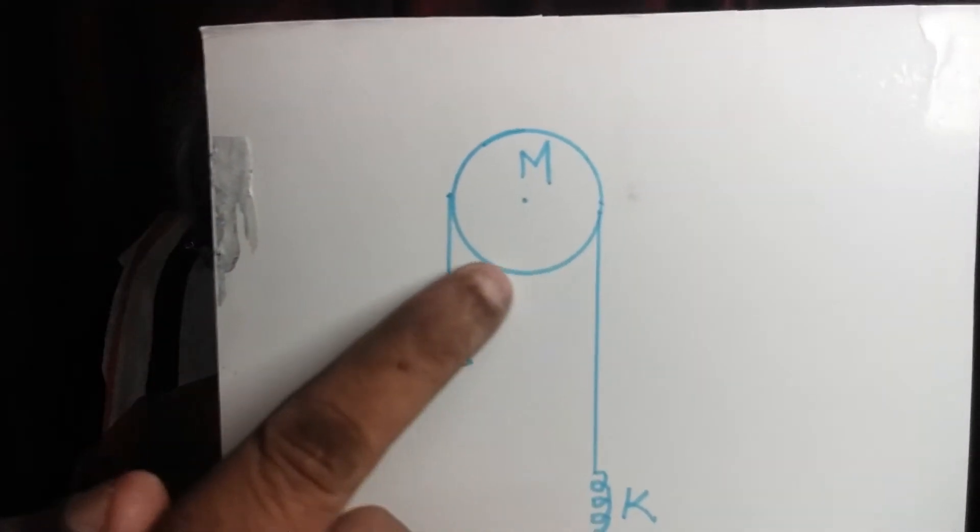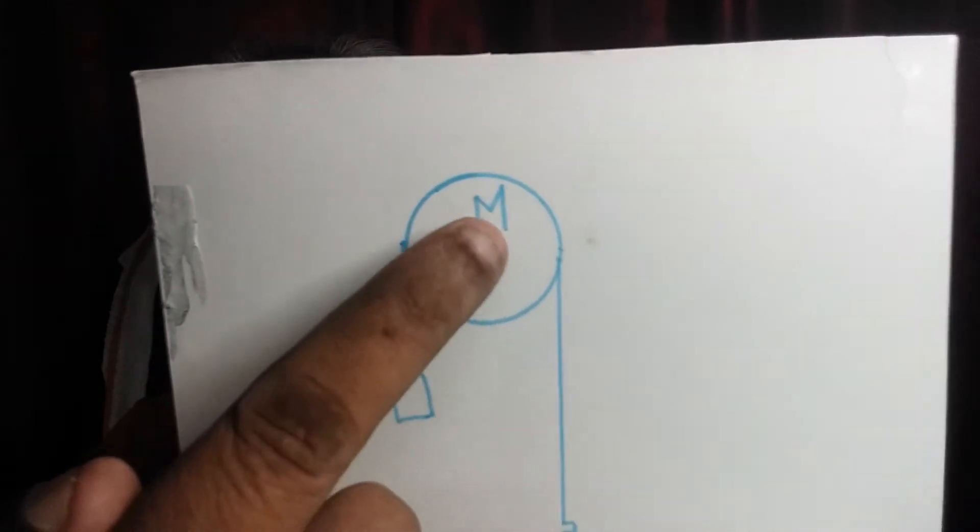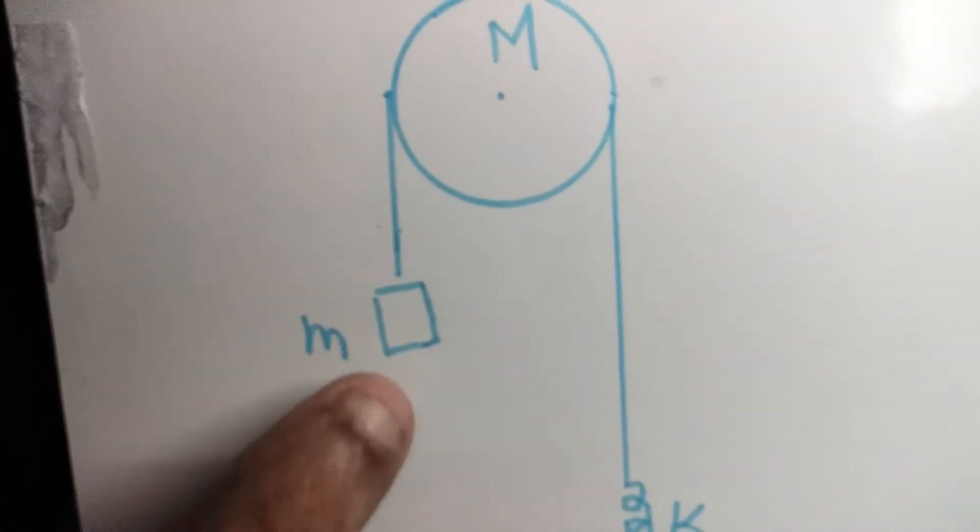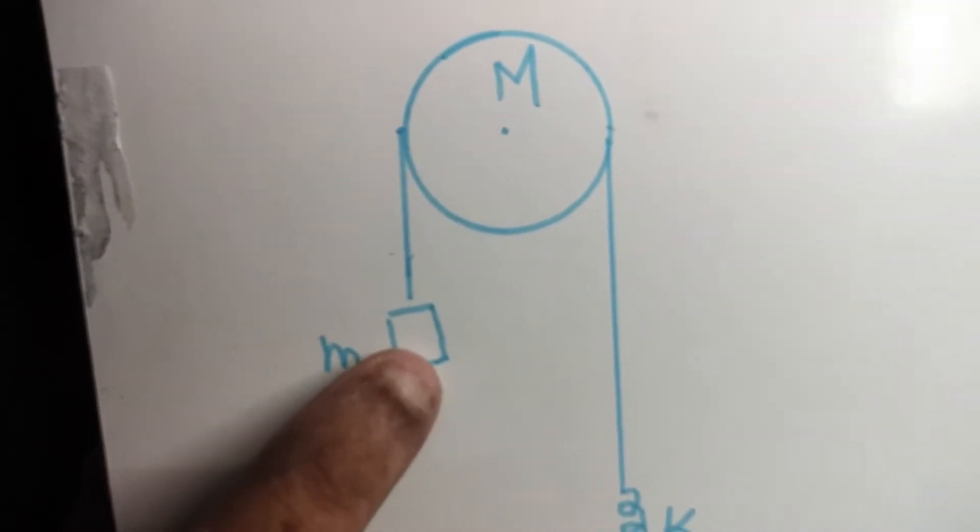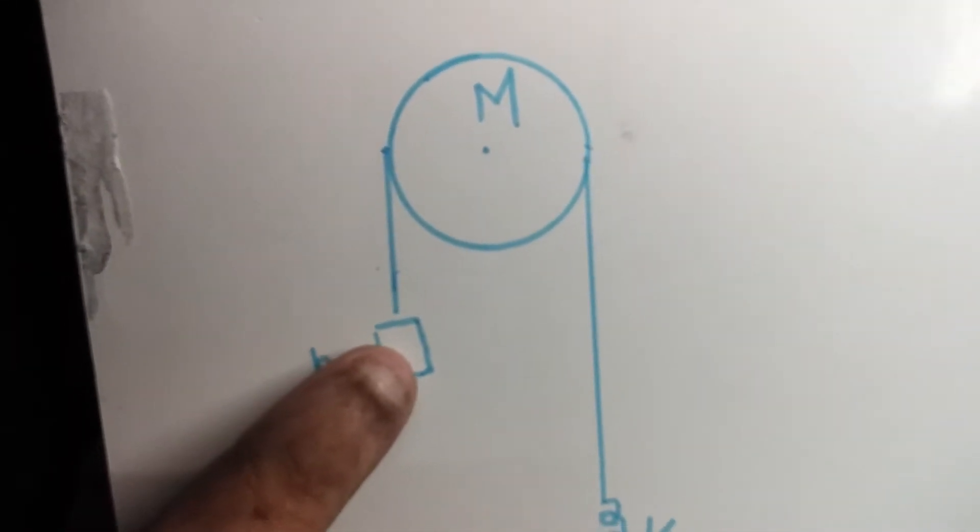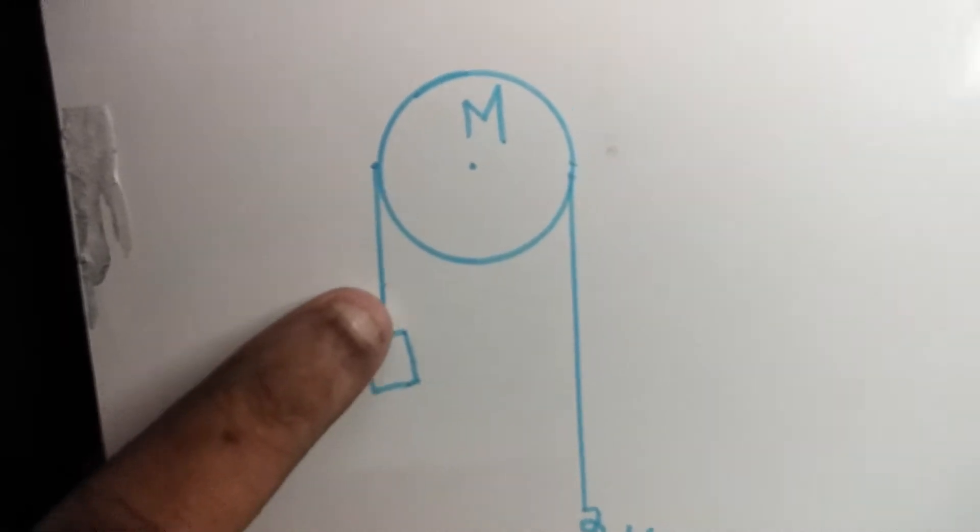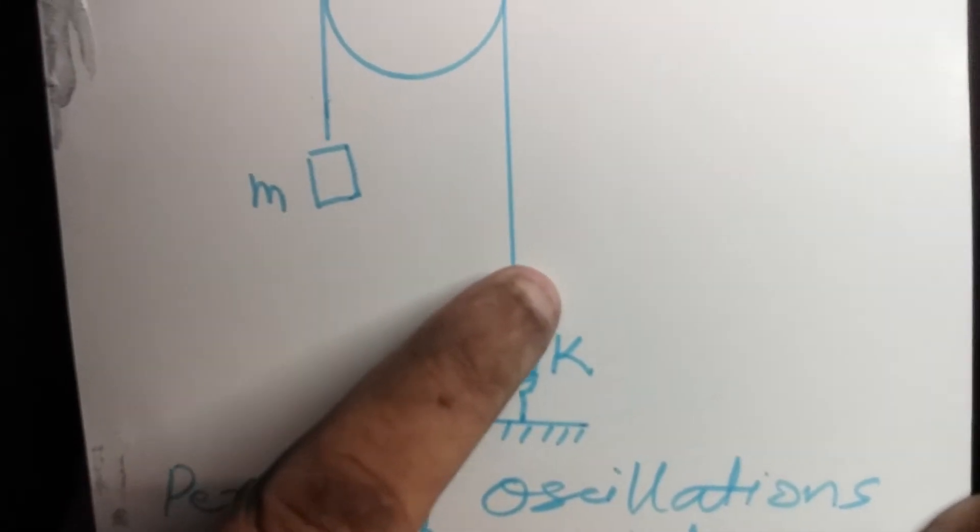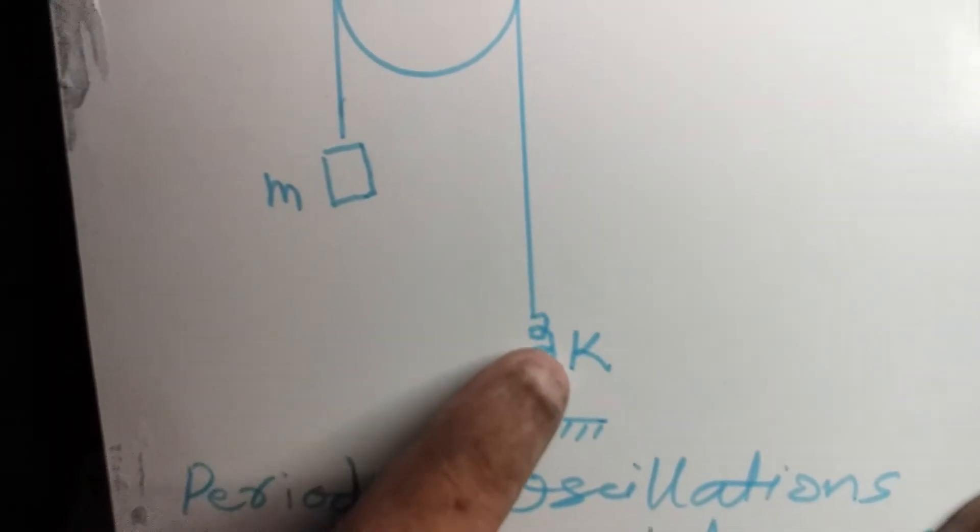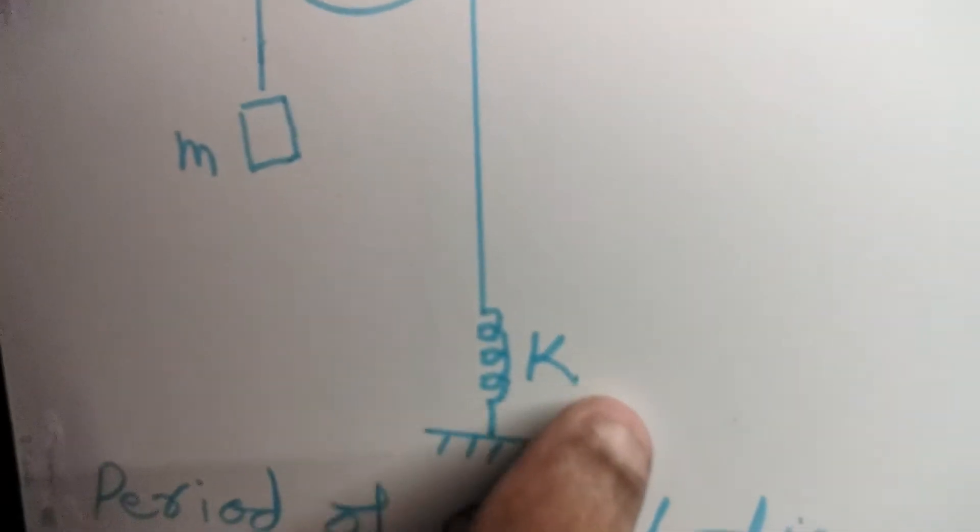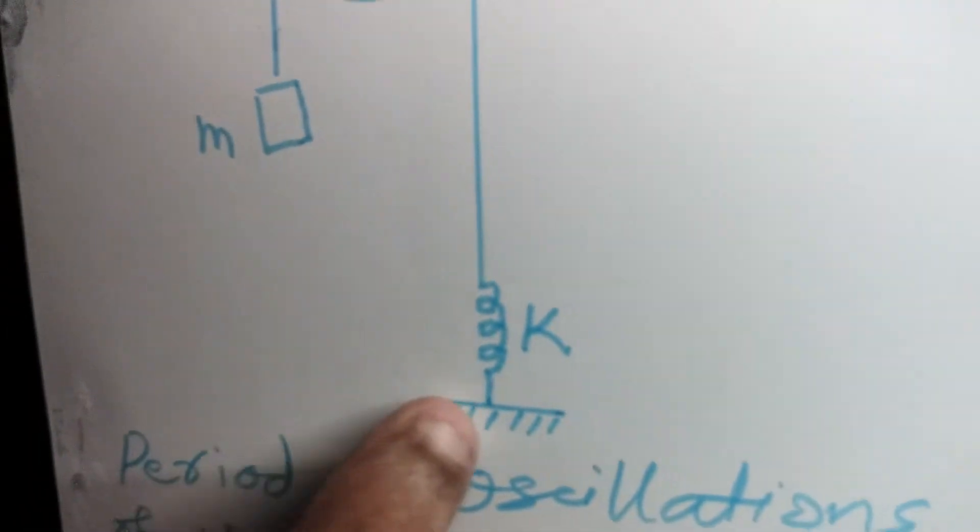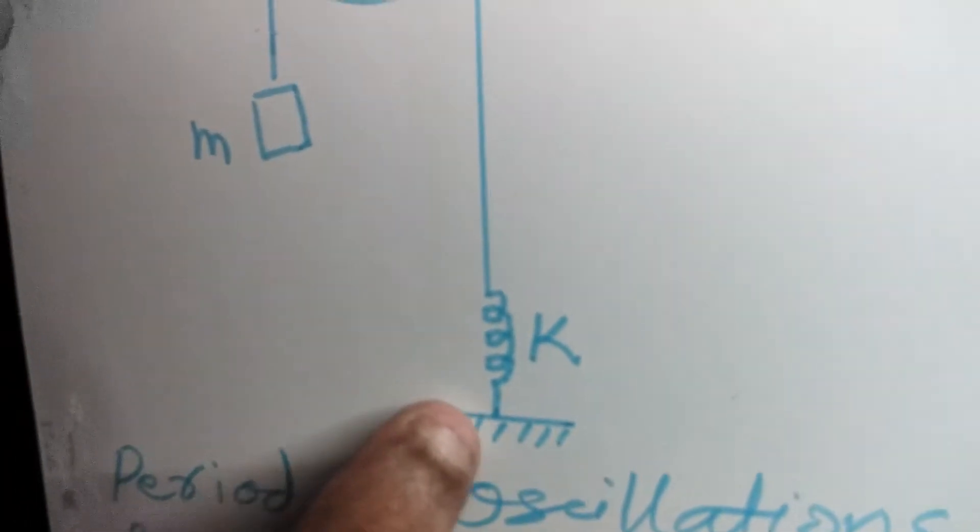This is a frictionless pulley of mass capital M. Small m is a load suspended at the end of a string which passes over the pulley, and the other end of the string is tied to a spring of constant K and is fixed to a rigid support.